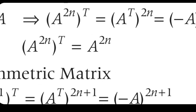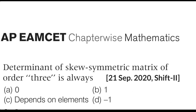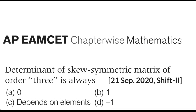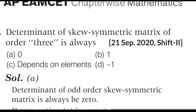Even power gives positive result — false; odd power gives negative — true. Next question: the determinant of a skew matrix of order 3 is always 0, or 1, or depends on elements, or minus 1. The answer: the determinant of an odd-order skew matrix is always 0.